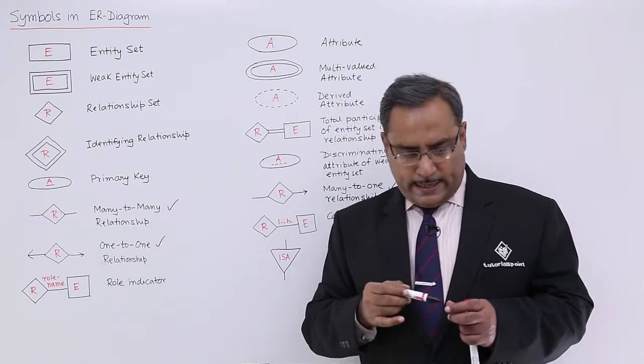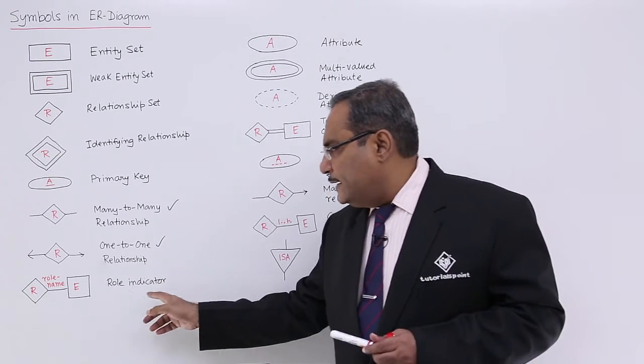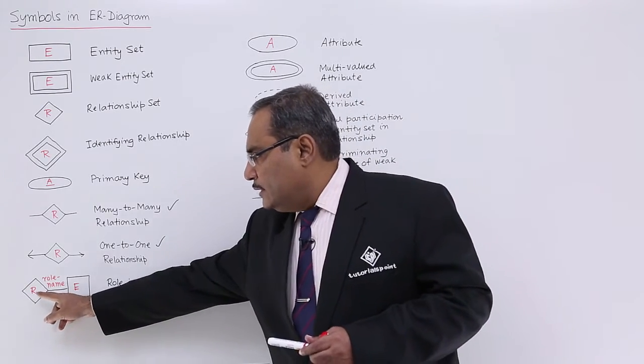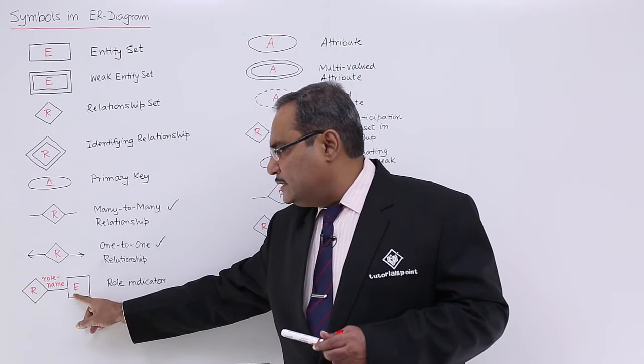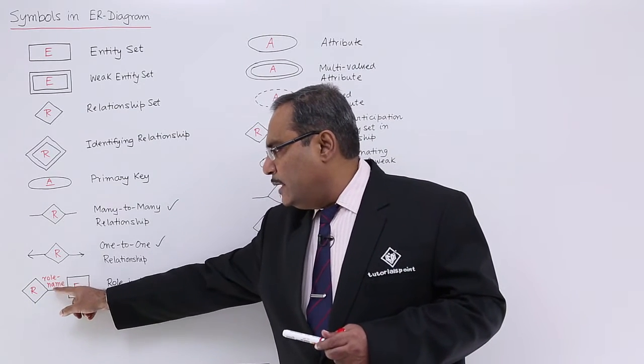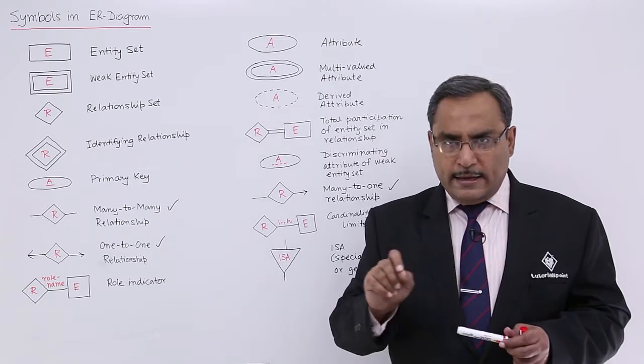Next one is the role indicator. The role indicator will be shown in this way. This is the relationship set, this is the entity set, and the role name will be written across the link or line.